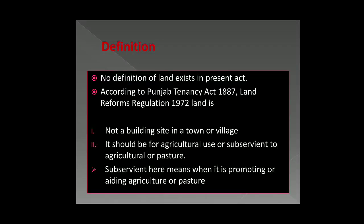Subservient means when land is promoting or aiding agriculture or pasture. Pasture refers to cattle farming — people have cattle farms with sheep, goats, cows, and buffaloes, and to raise them you need a lot of land, water, and grass. You need to grow food for them. That land used for pasture also comes under the definition of land under this act.